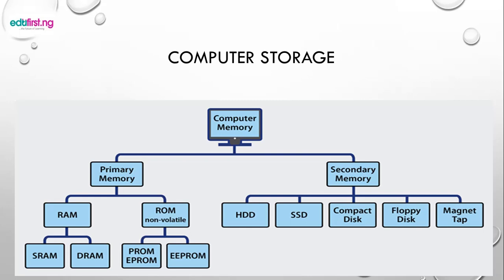Now let's look at the hierarchy of computer storage. As we can see, computer memory is divided into two: the primary memory (main memory) and the secondary memory. The primary memory is divided into RAM and ROM. Secondary memory includes the hard disk drive, SSD, compact disk, floppy disk, and magnetic tape. Under RAM we have SRAM and DRAM; under ROM we have PROM and EEPROM. These are examples of memory storage and their hierarchy.